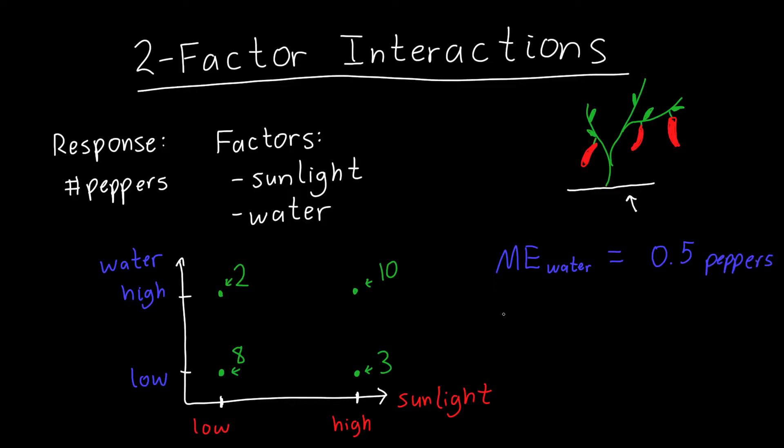We can also calculate the main effect of sunlight by, again, doing the same thing, subtracting the low average value of sunlight from the high average value of sunlight. And if I do that, then I get, what is this, 13 minus 10, about 1.5 peppers.